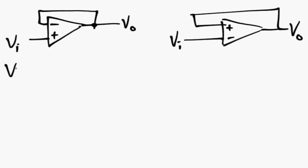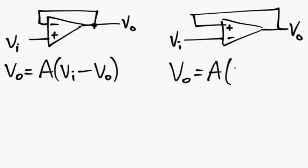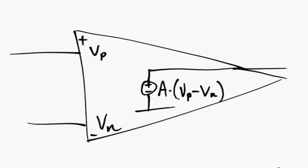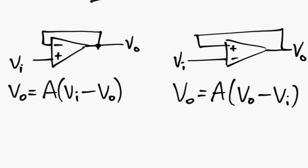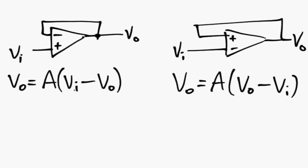An equation for each of these is in this case Vout equals A, that gain of the operational amplifier, times VI minus Vout. And over here we have Vout equal to A times Vout minus VI. Looking back at our original model we see that we have the positive terminal voltage minus the negative terminal voltage.